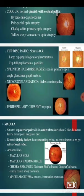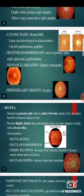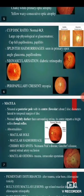You can see images of a healthy person and in case of glaucoma. There can be splinter hemorrhages, which are seen in primary open angle glaucoma and papilledema. There will be neovascularization in case of diabetic retinopathy, and peripapillary crescent in case of myopia.